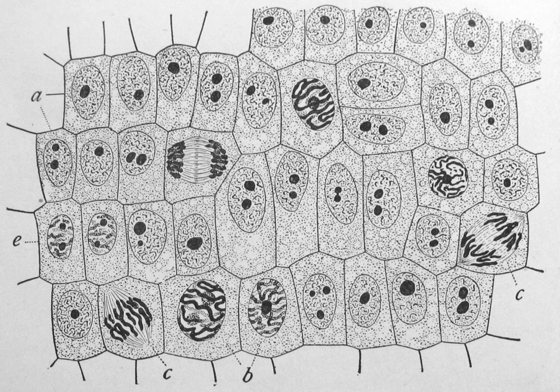The cell nucleus is the most conspicuous organelle found in a eukaryotic cell, serving as the cell's information center. It houses the cell's chromosomes, and is the place where almost all DNA replication and RNA synthesis occur. The nucleus is spherical and separated from the cytoplasm by a double membrane called the nuclear envelope. The nuclear envelope isolates and protects a cell's DNA from various molecules that could accidentally damage its structure or interfere with its processing.